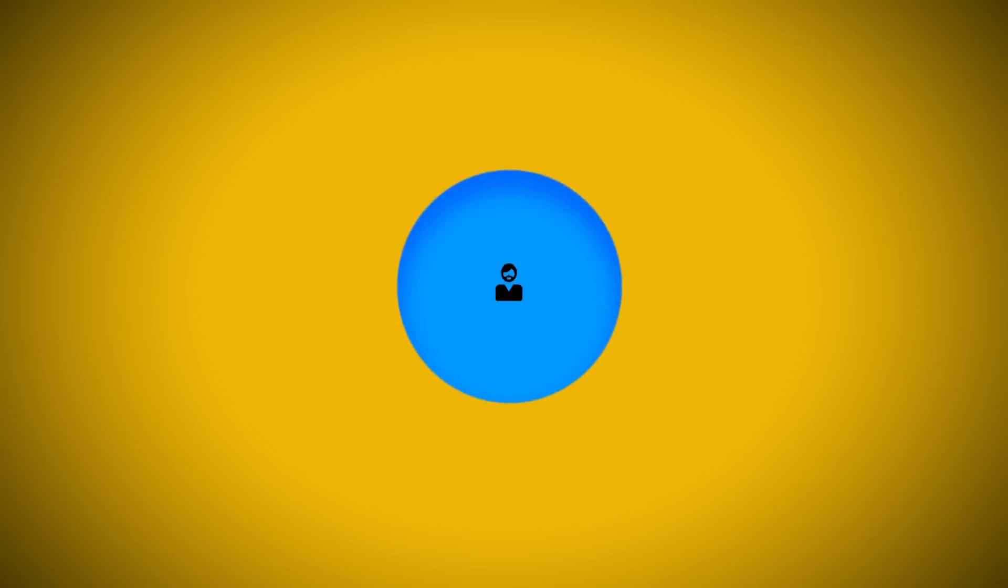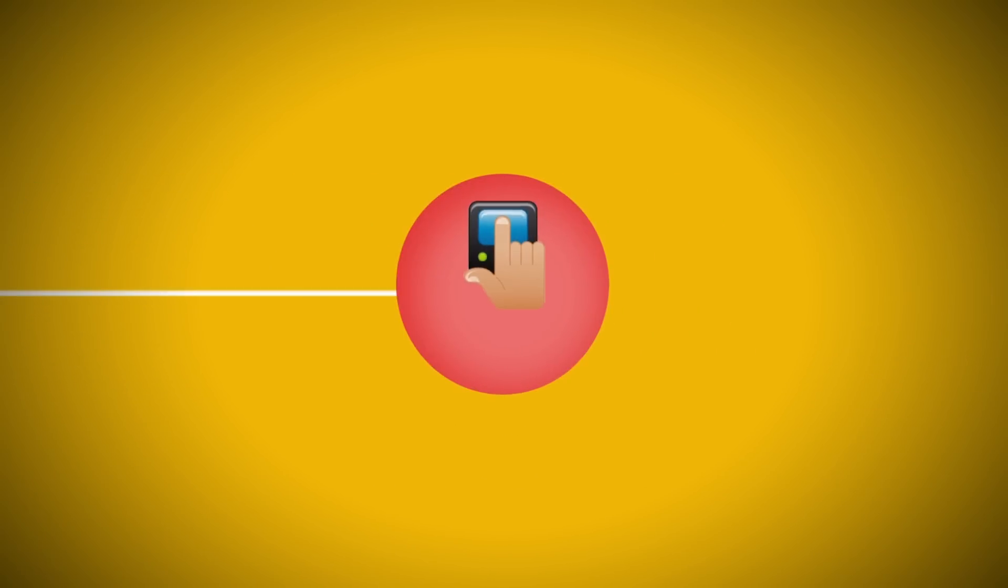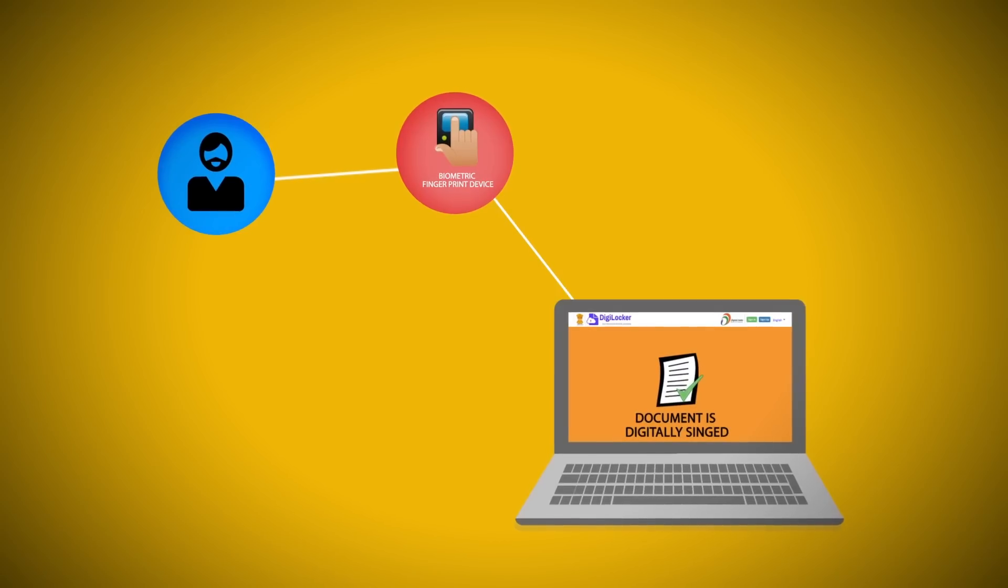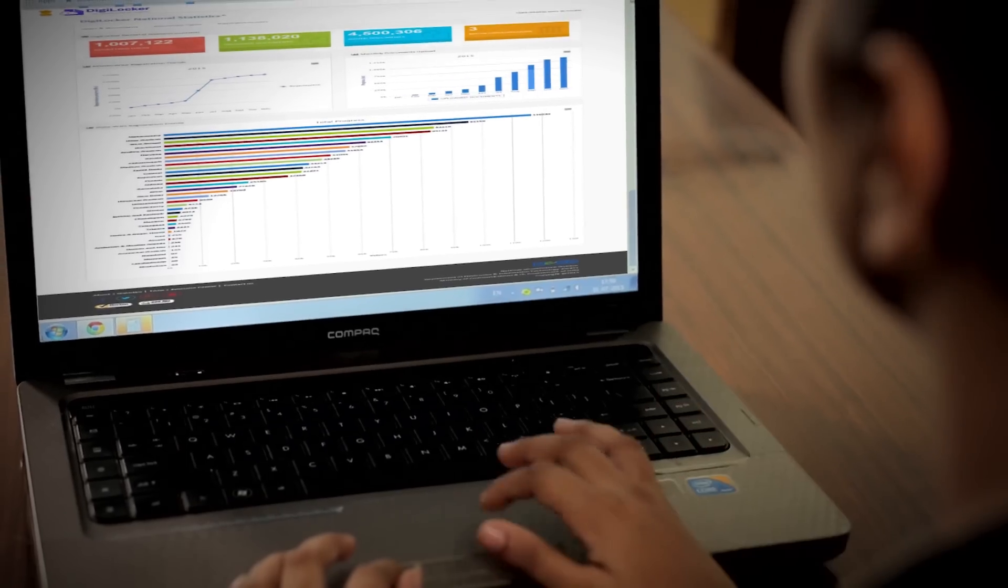Once inserted, the OTP will successfully verify the e-document and it will be digitally signed. What's worth noting is that if you have a biometric fingerprint device, then you will be able to carry out this whole process without an Aadhaar linked mobile.